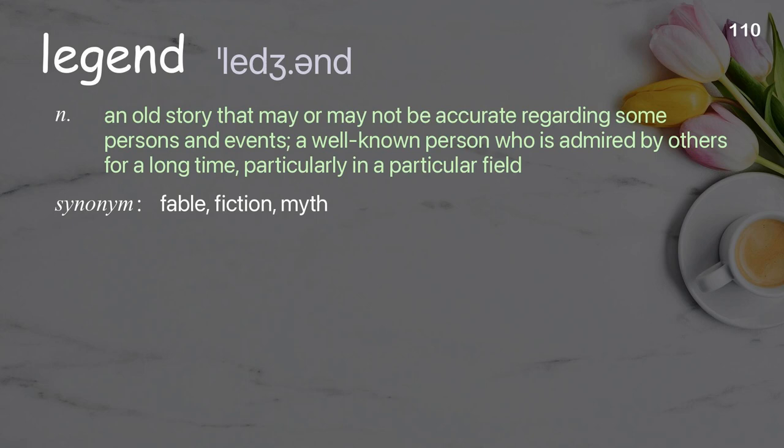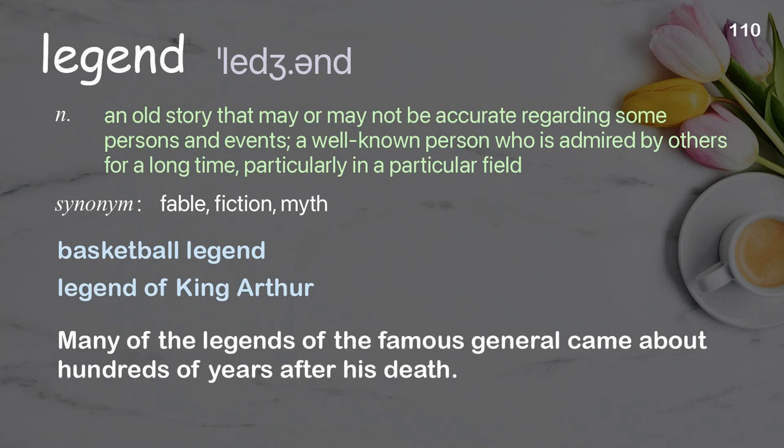Legend: an old story that may or may not be accurate regarding some persons and events; a well-known person who was admired by others for a long time, particularly in a particular field. Examples: basketball legend; legend of King Arthur. Many of the legends of the famous general came about hundreds of years after his death.